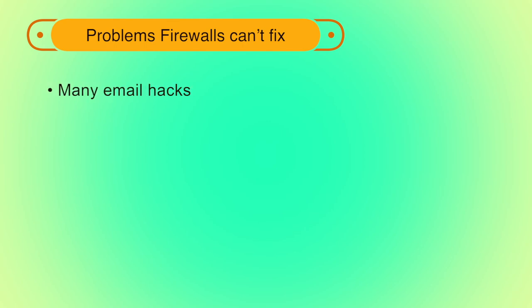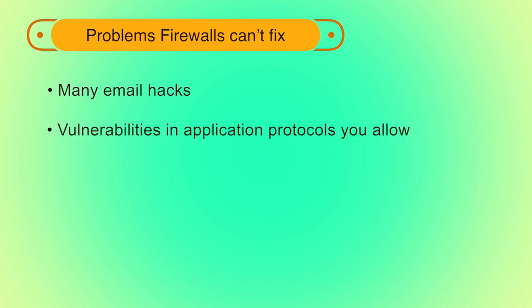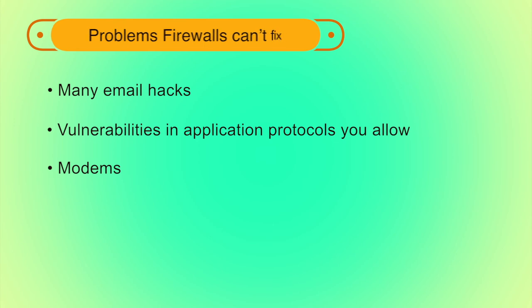Problems that firewalls cannot fix include: many email hacks, vulnerabilities in application protocols you allow (for example, incoming HTTP requests to an IIS server), and modems — if users on the internal network use a modem to connect to an external ISP, everything that user is connected to is exposed to the external network. Many users don't like the restrictions firewalls place on them and will try to subvert those restrictions.